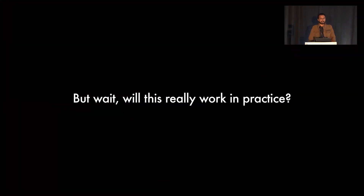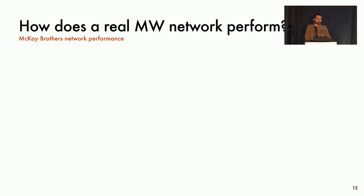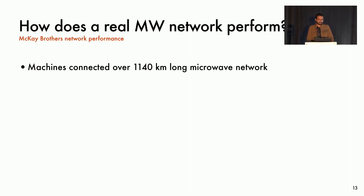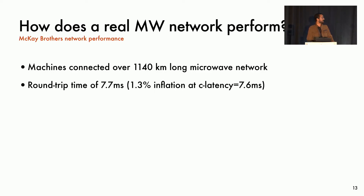So all this analysis is good, but is microwave really capable of providing low latency at long distances — will it work actually in practice? To measure a real long-distance microwave network, we acquired access to the McKay Brothers high-frequency trading network between Chicago and New York. This industry is so competitive and secretive that it took us two years just to get access. Our two endpoints for this experiment were over 1,100 kilometers apart. The round-trip time we measured was consistently at 7.7 milliseconds. For comparison, light takes 7.6 milliseconds to make this round trip. And it is quite impressive that we see at the application layer only 1.3% inflation over the physical lower bound.